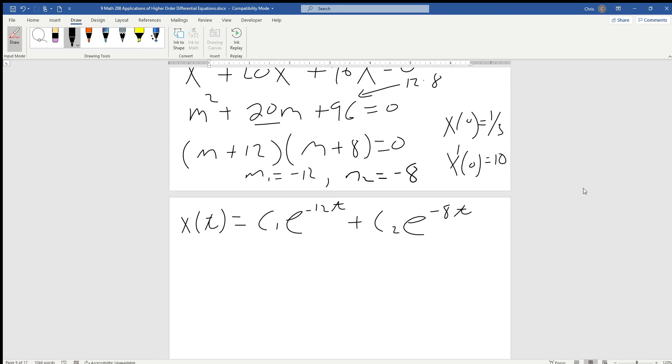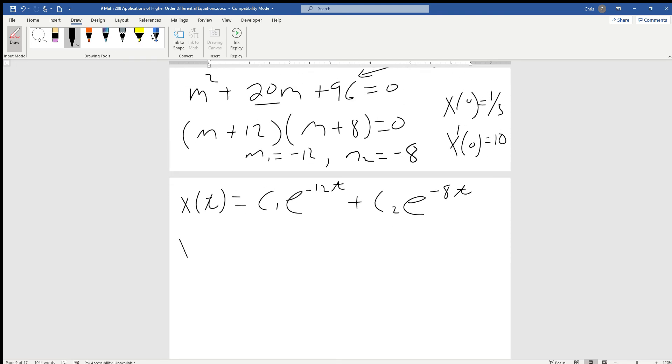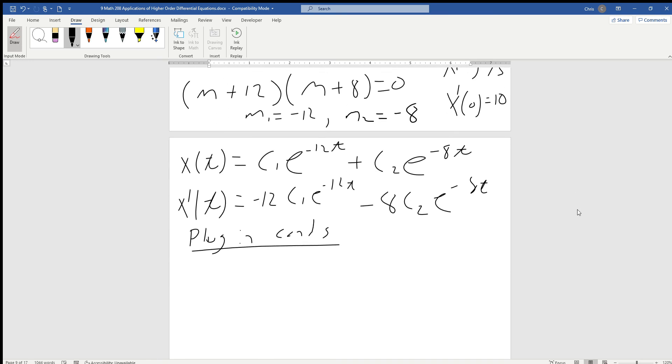Now we can find the derivative and use our initial conditions. X prime at t is minus 12 c1 e to the minus 12t minus 8 c2 e to the minus 8t. We can set up our system, which is really nice because when we substitute 0 in, all the exponentials go away.